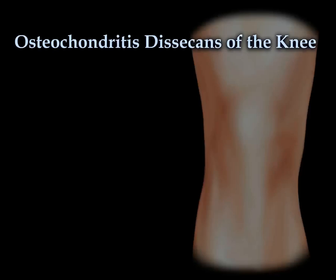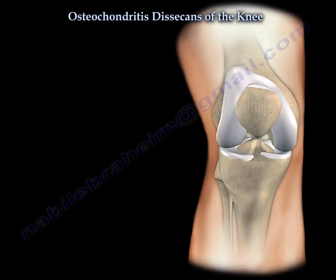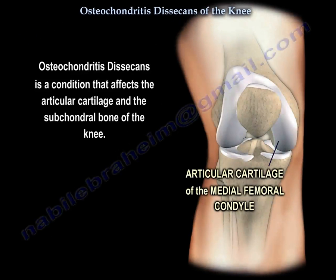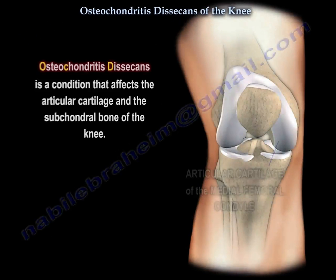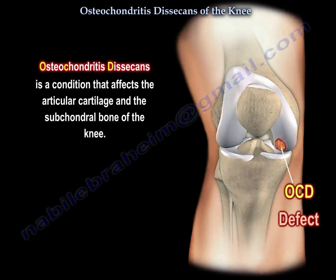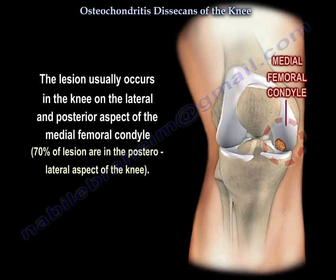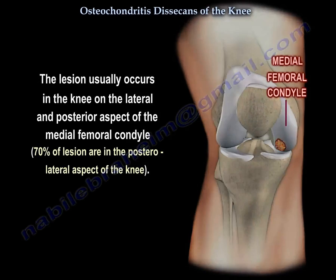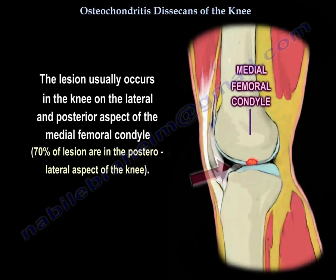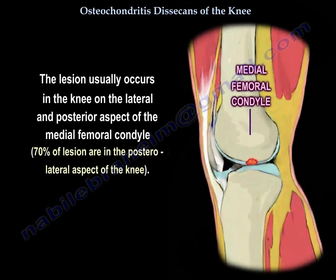Osteochondritis dissecans of the knee is a condition that affects the articular cartilage and the subchondral bone of the knee. The lesion usually occurs on the lateral and posterior aspect of the medial femoral condyle, with 70% of lesions located in the posterolateral aspect.